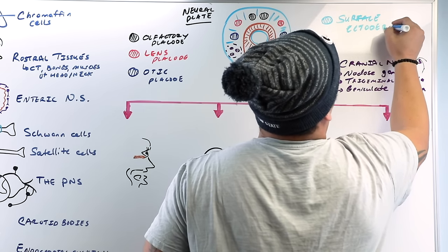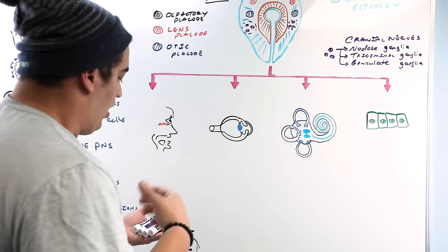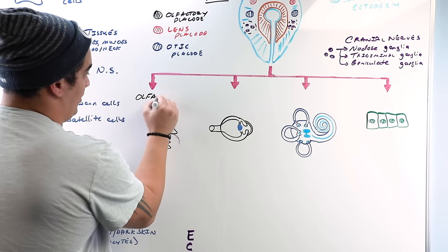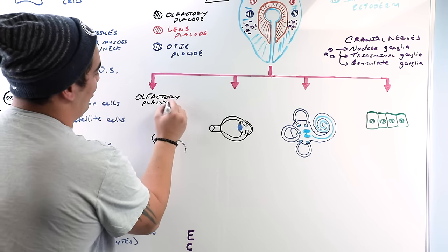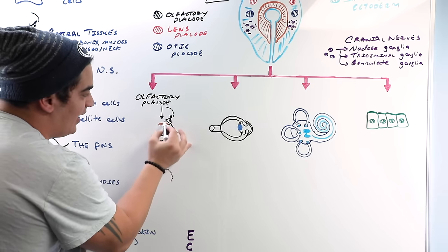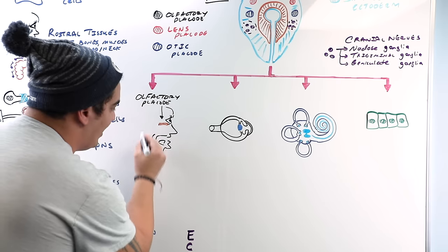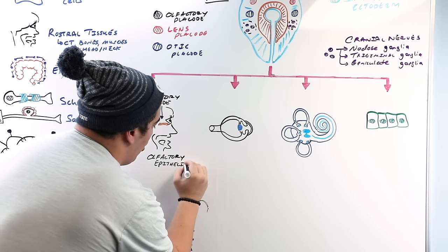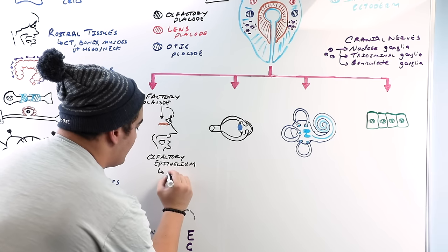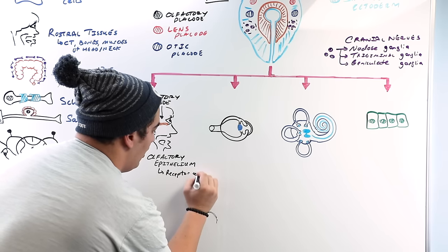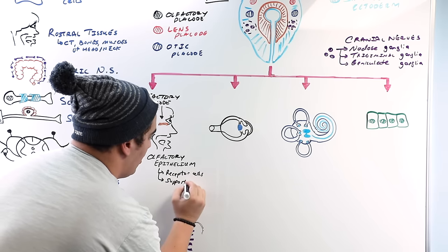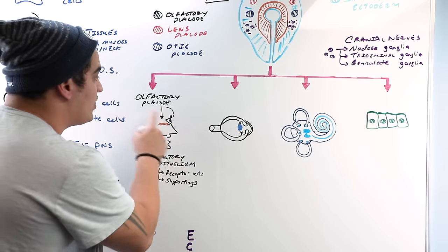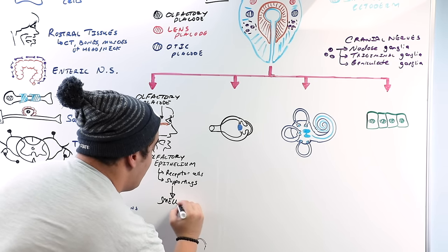The olfactory placode becomes the tissue at the roof of the nasal cavity called the olfactory epithelium. This is made up of receptor cells, supporting cells, and the olfactory nerves located in that region of olfactory epithelium. The whole significance of the olfactory placode is that it enables the sense of smell.